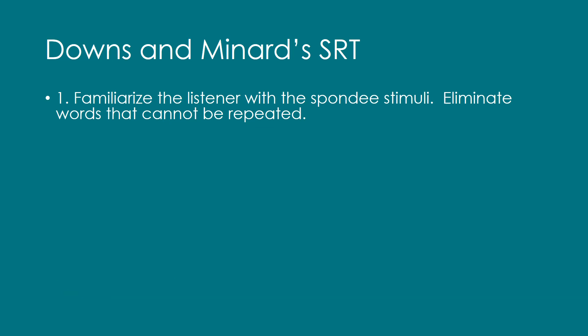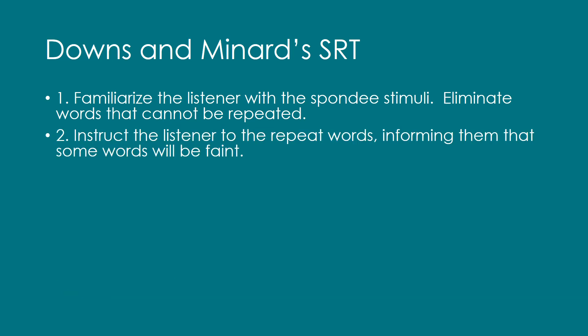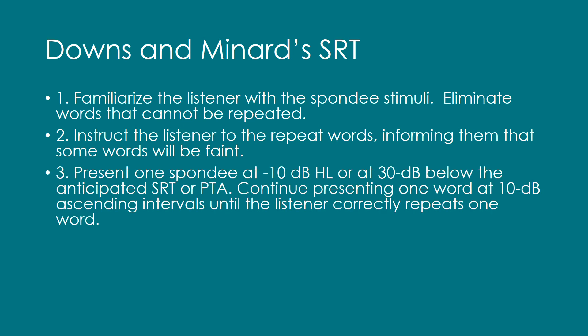Step two: instruct the listener to repeat the words, informing them that some words will be faint. Step three: present one spondee at negative 10 dB HL or at 30 dB below the anticipated SRT or PTA.